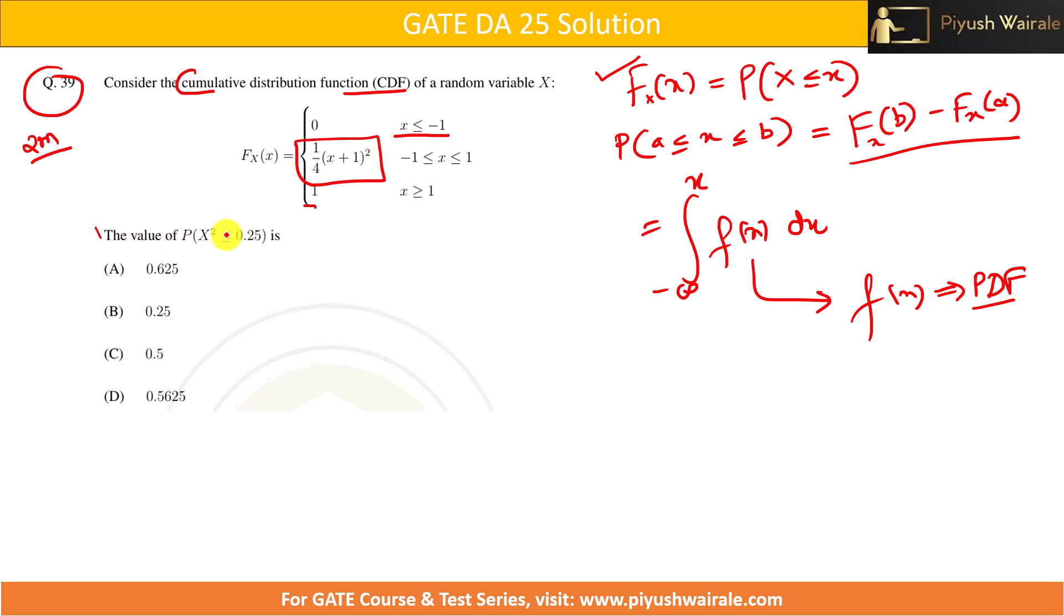Now see here, we have probability when X is less than or equal to some value, but not about X². So can we convert this problem to X? Yes obviously. When I say X² equals to 0.25, this means X is basically plus minus 0.5.